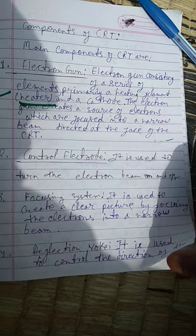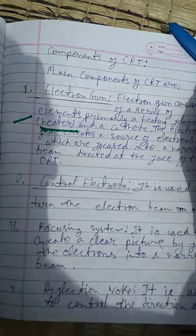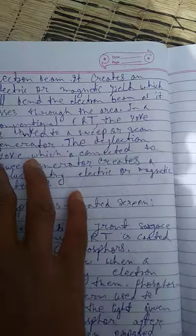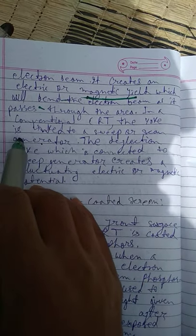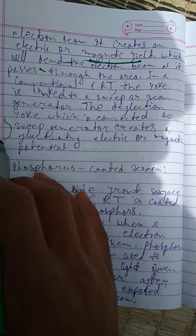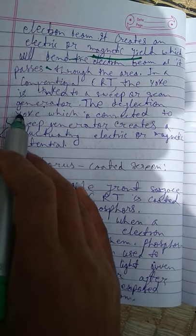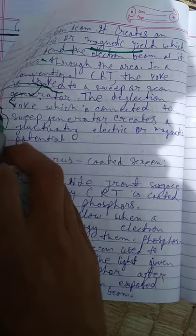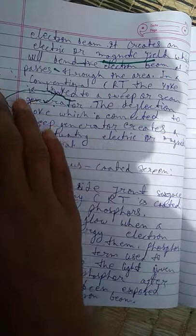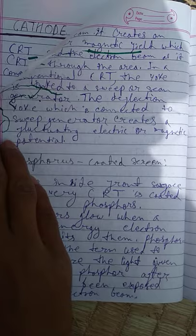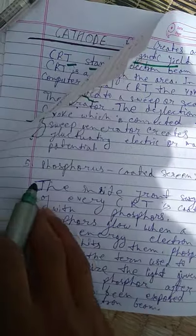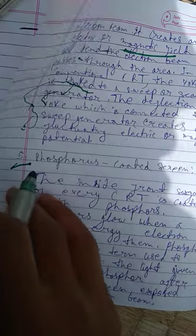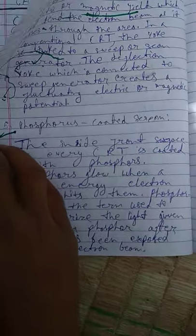The deflection yoke is used to control the direction of the electron beam. It creates an electric or magnetic field which bends the electron beam as it passes through. In a conventional CRT, the yoke is connected to a sweep or scan generator, which creates a fluctuating electric or magnetic potential.